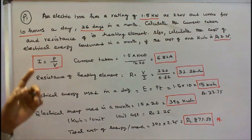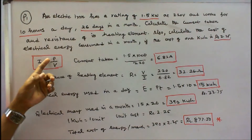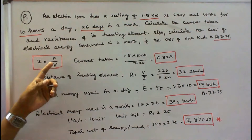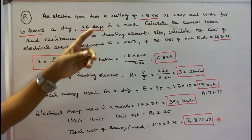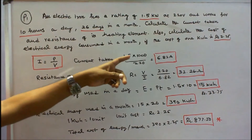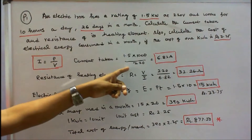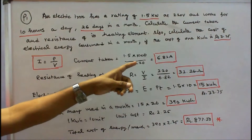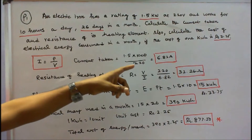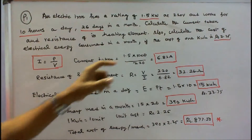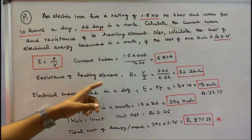We know that I is equal to P by V, where P is power and V is voltage. Power is given as 1.5 kW, so 1.5 into 1000 divided by V, which is 220. That is equal to 6.82 Amps. Current taken is 6.82 Amps.